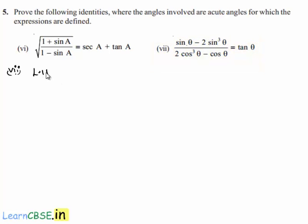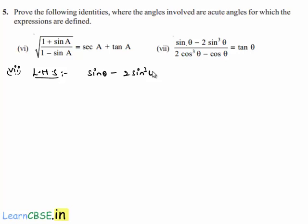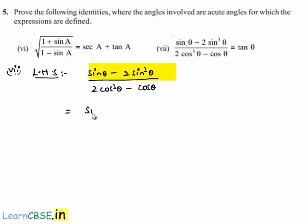In order to prove this, let us consider the left hand side, that is (sin θ - 2sin³θ) / (2cos³θ - cos θ). In the numerator, let us take sin θ as common, then we get the numerator as sin θ × (1 - 2sin²θ).